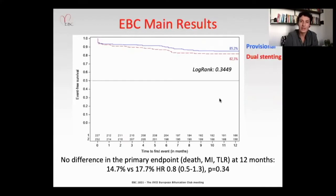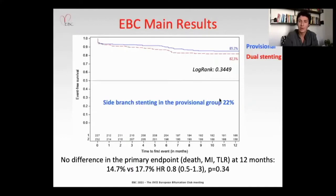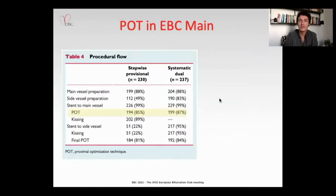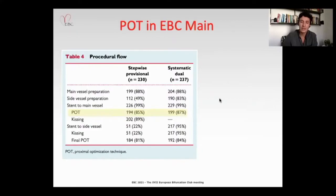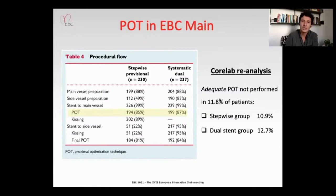The ABC Main trial randomized 467 patients with true left main bifurcation lesions (Medina 1,1,1 or 0,1,1) to stepwise provisional strategy versus upfront two-stent strategy. POT was mandatory by protocol, but approximately 15% of patients did not undergo POT due to operator preference. Through core lab re-analysis of procedures, adequate POT — with correct balloon position and size — was not performed in around 11.8% of patients across both groups.